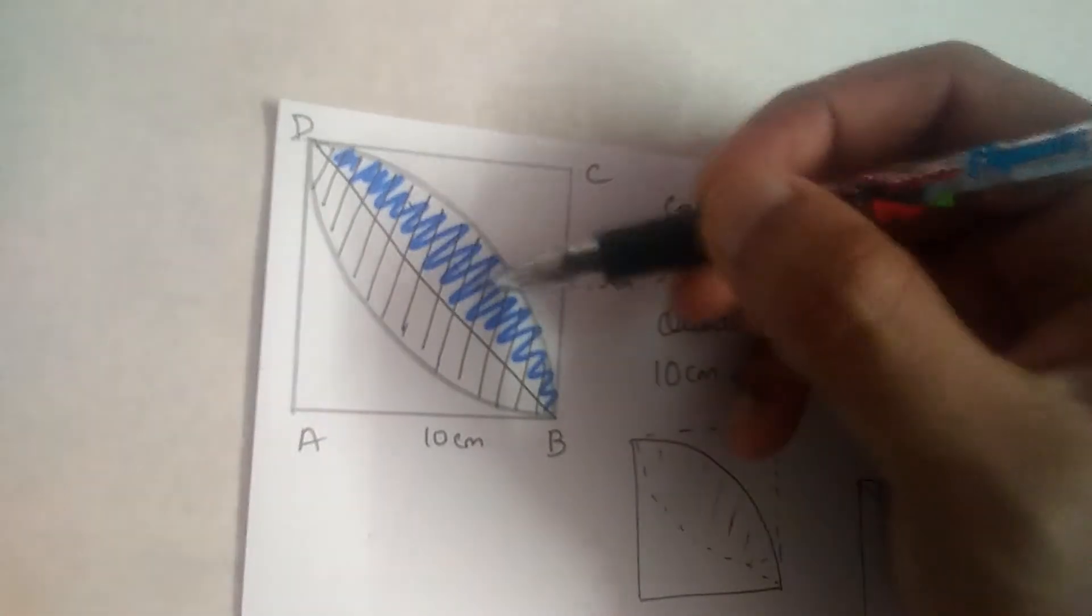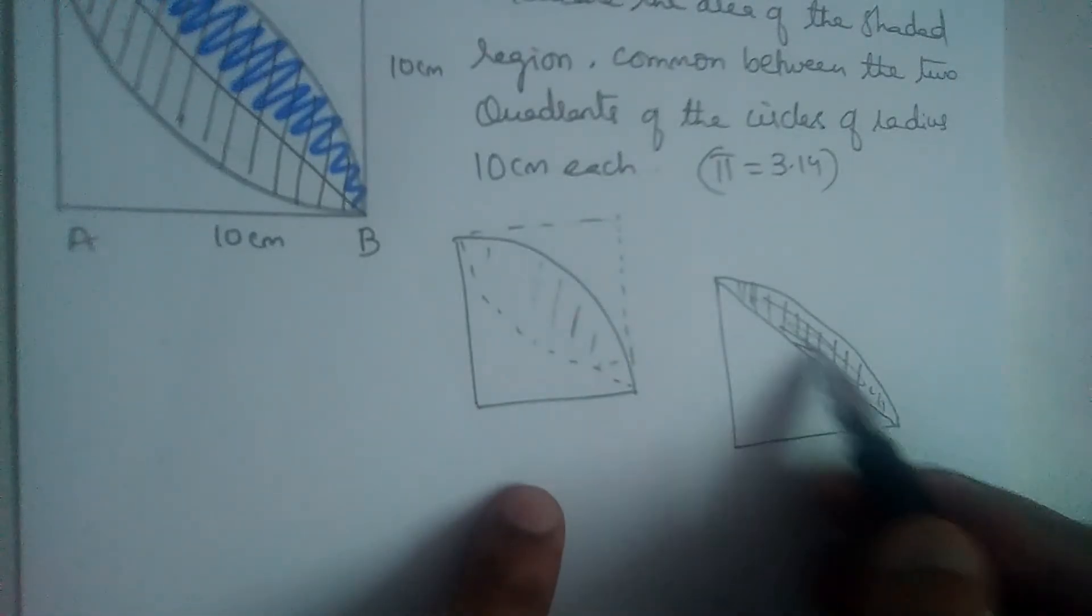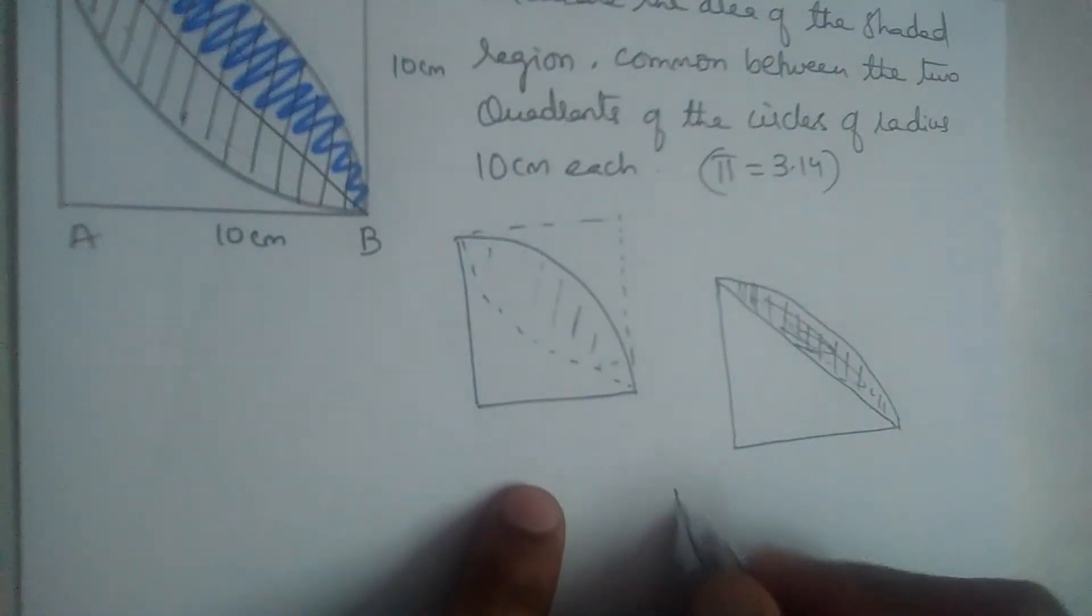This part will also be equal to this same thing. So let us first find this. So it is quarter circle.